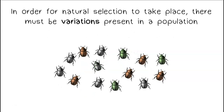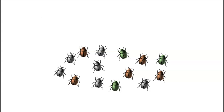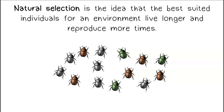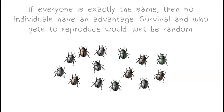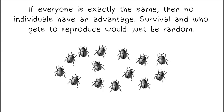In order for natural selection to take place, there must be variations present in a population. Natural selection is the idea that the best suited individuals for an environment live longer and reproduce more times. If everyone is exactly the same, then no individuals have an advantage. Survival and who gets to reproduce would just be random.